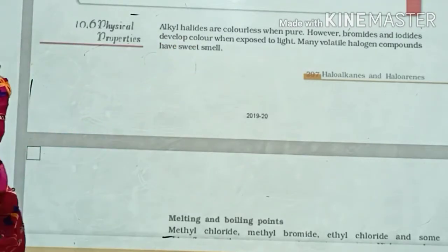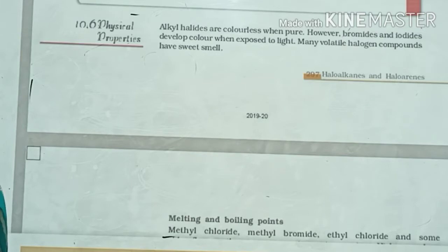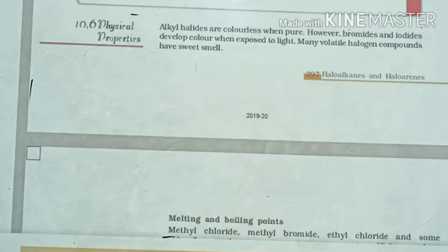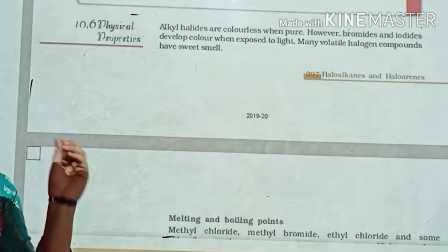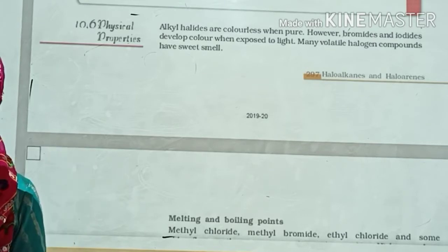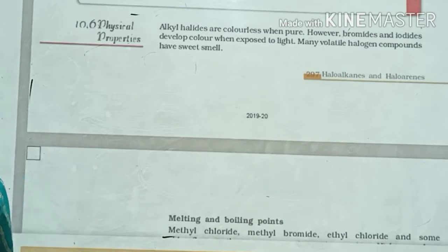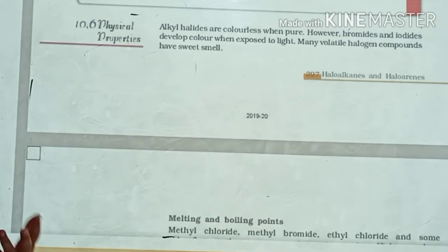Alkyl halides are colorless when pure, but when they are exposed to sunlight, they develop colors. Some changes are taking place because of the sunlight and that is why the color is developed.